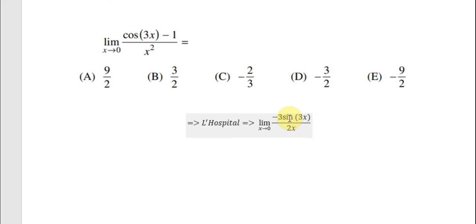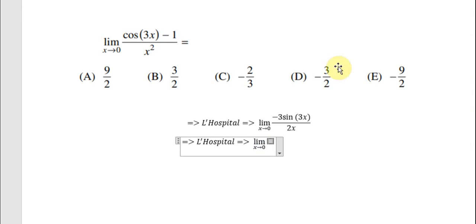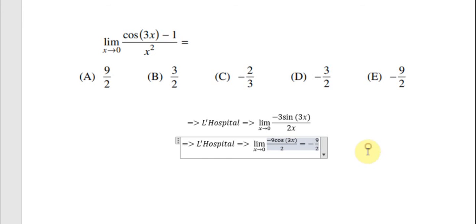Now we know that this is still zero over zero, so we apply L'Hôpital's rule again. If we put s equal to zero, cosine of zero changes to one, and we get minus nine over two. The answer for the question is E.